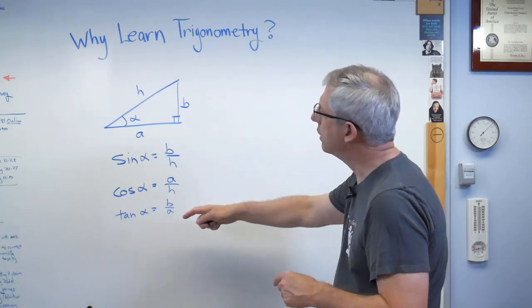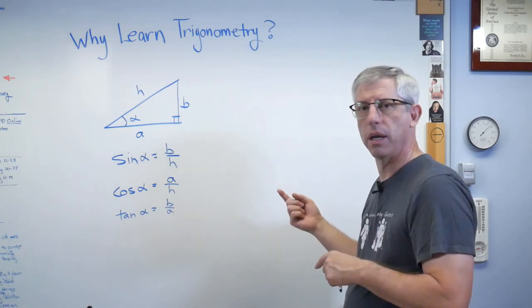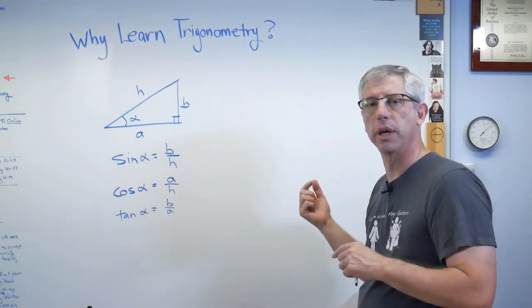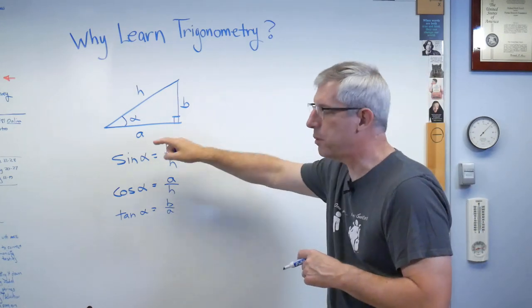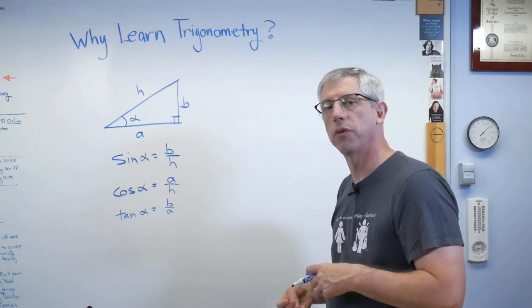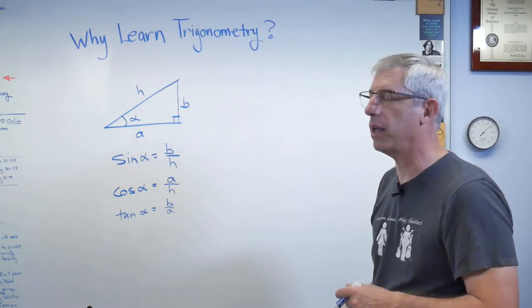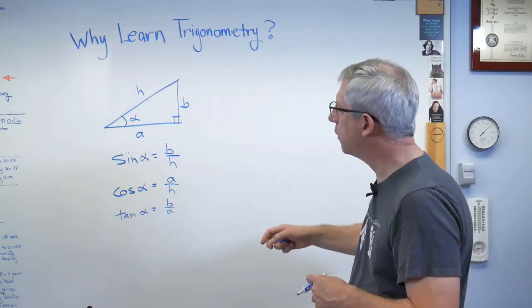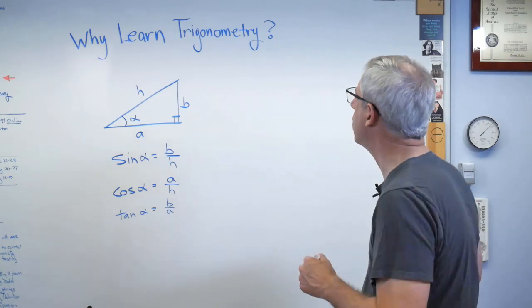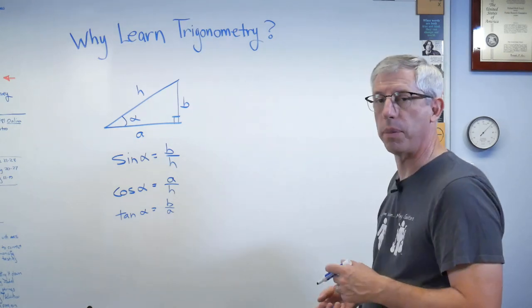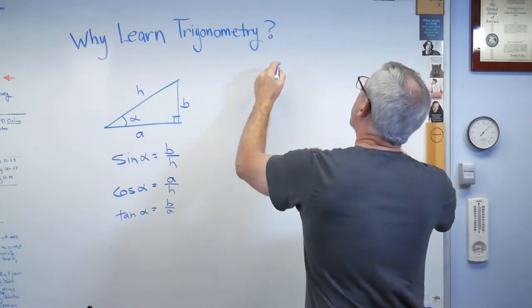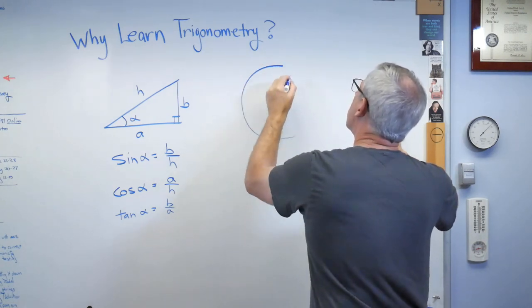So, we have these. The next step in the development of trigonometry is to develop some relationships between those that are further tools for letting us calculate things. And there's a small handful of these relationships, these identities, that you'll develop in the class. So, here's one. I'll just do one for you and get the idea here.